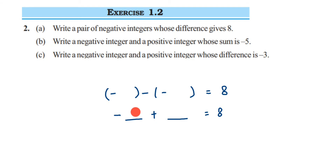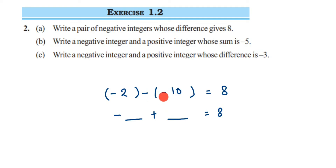So minus into minus will become plus, which means one number is positive and one number is negative, and you're doing addition. When you add integers with different signs, the first number is negative and the second is positive, and they get subtracted. You have to select numbers such that when you subtract them you get 8 — for example, 10 minus 2 is 8, or 13 minus 5 is 8. I'll take 10 and 2, so the second integer is 10 and the first integer is minus 2, and the other is minus 10.